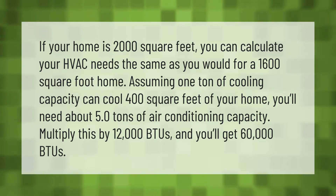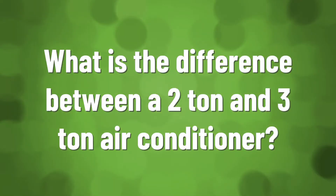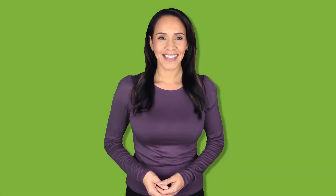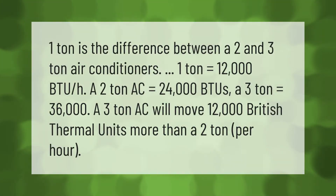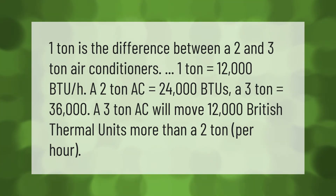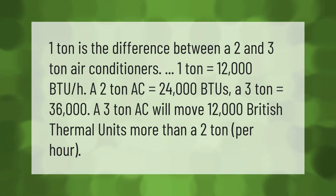One ton is the difference between a two and three ton air conditioner. One ton equals 12,000 BTU/h. A two-ton AC equals 24,000 BTUs, and a three-ton equals 36,000 BTUs.